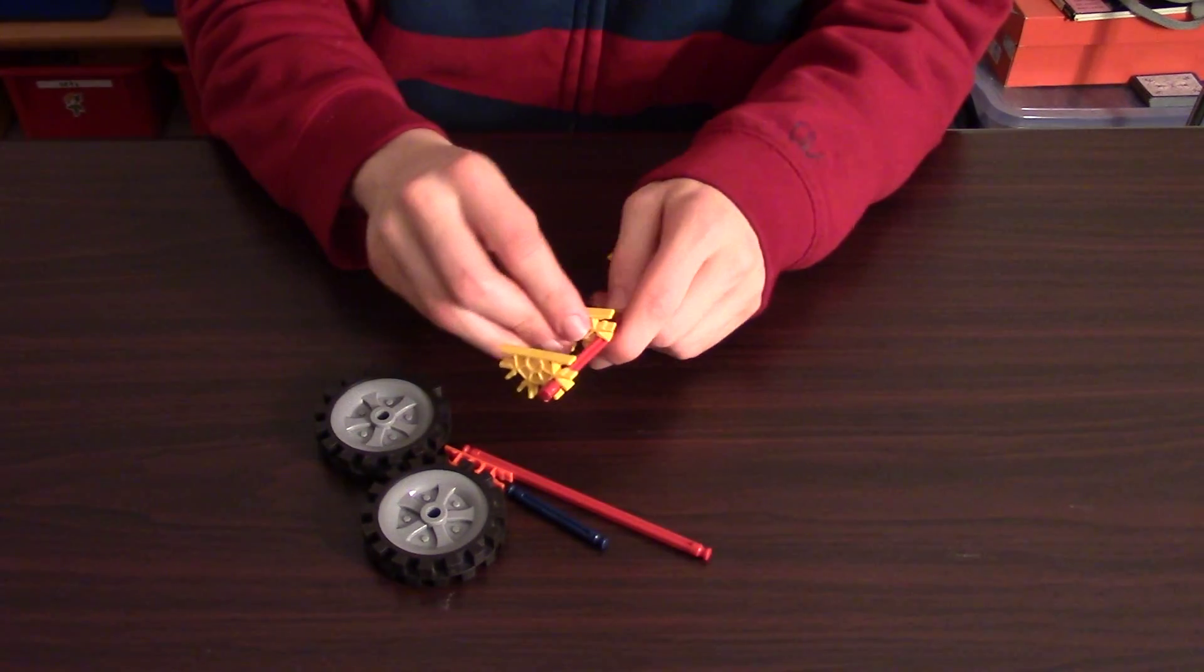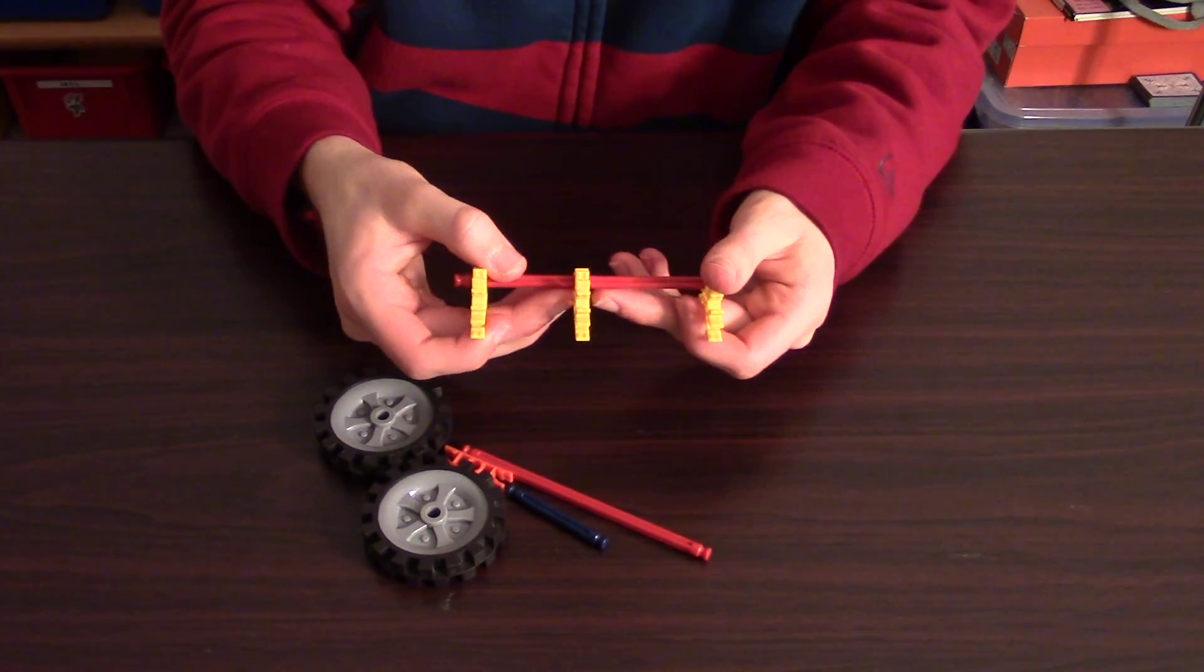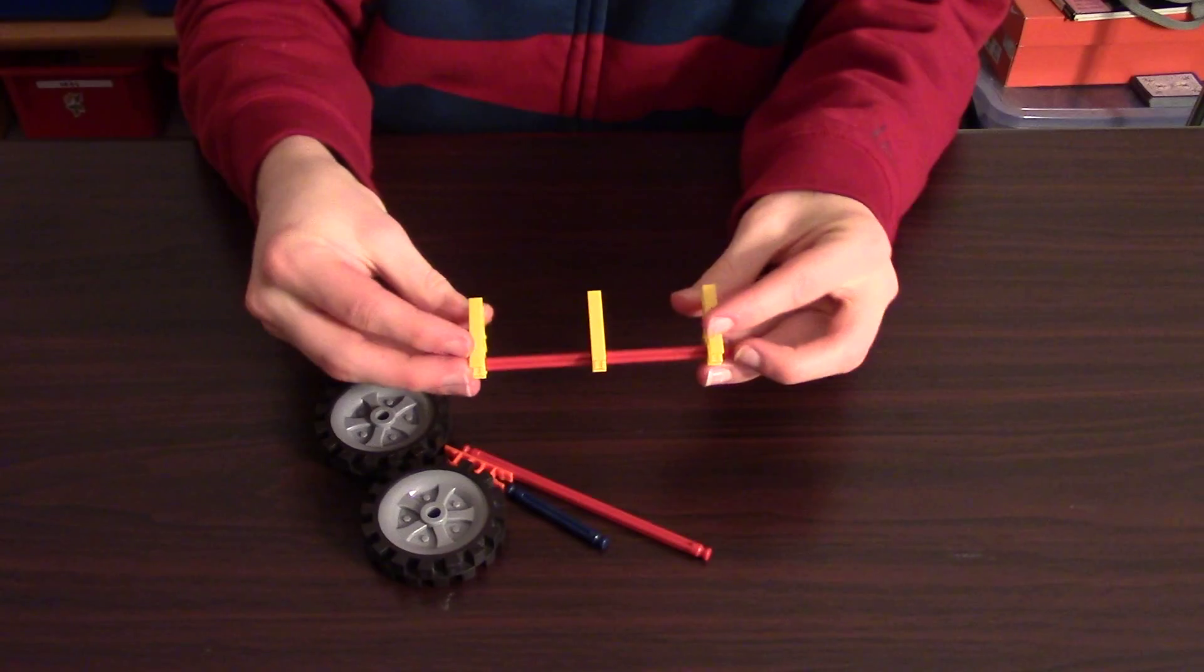Now, you can use this to line up this yellow Knex piece here in the very center of the rod, just like that.